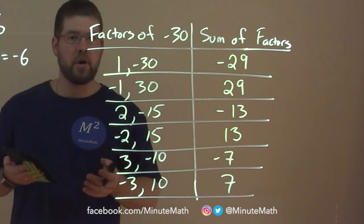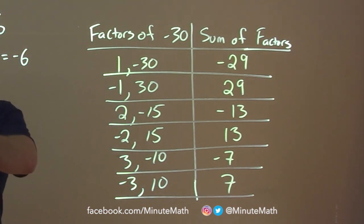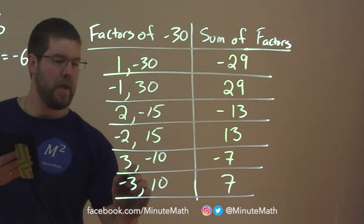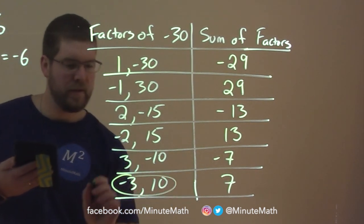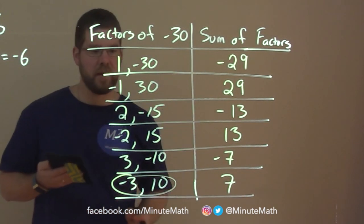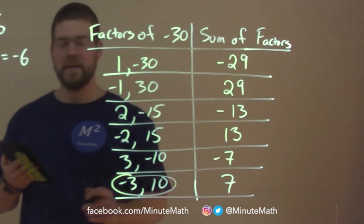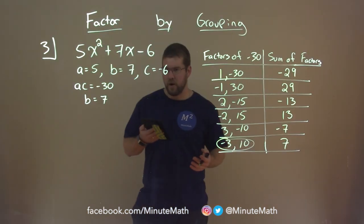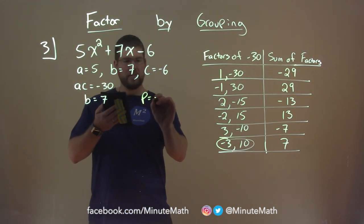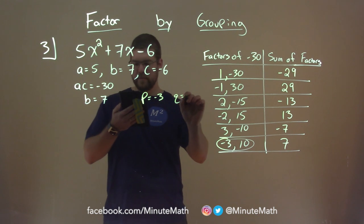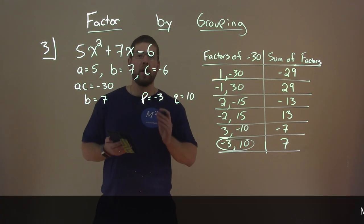And what do we want to have as our goal? What two numbers multiply to be negative 30 but add to be 7? And we have it right here. Negative 3 and positive 10 add to be positive 7 but multiply to be negative 30. So, our p-value is negative 3 and the q-value is positive 10.